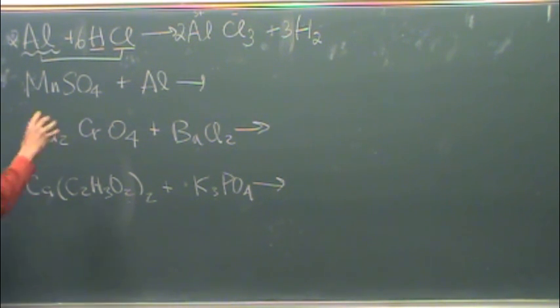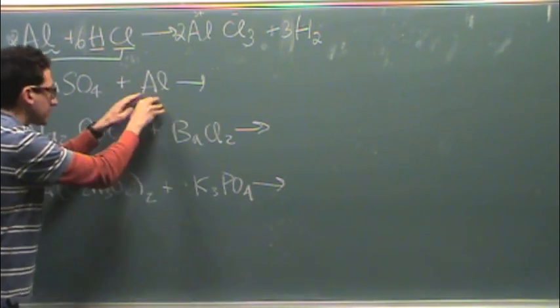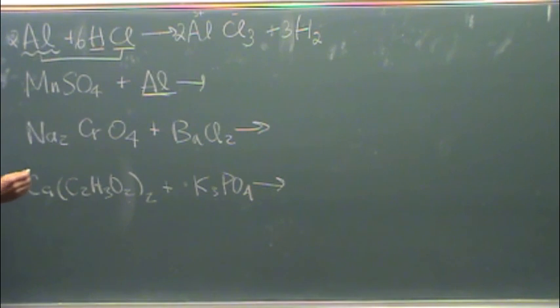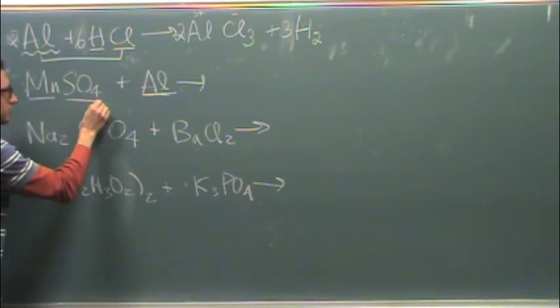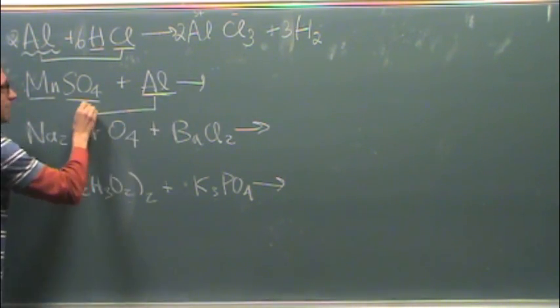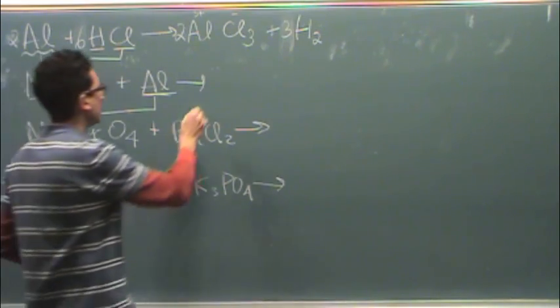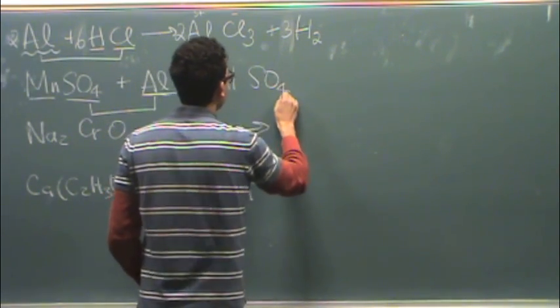Okay, let's try the next one. Again, a single replacement. I have a compound plus a lone element. So, the aluminum, again, will have a positive charge. Manganese is positive, sulfate is negative. So the aluminum has to go with the sulfate because a plus likes a minus. That's its only option. It's not going to do a plus with a plus. So we've got aluminum sulfate.